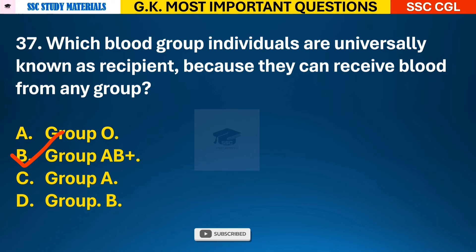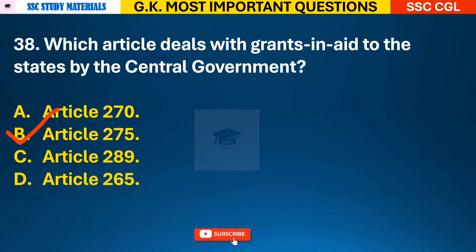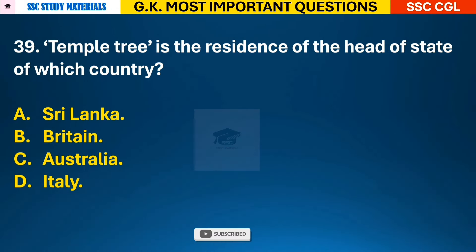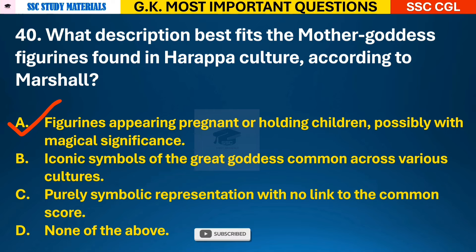Question 38: Which article deals with the grant of aid to the states by the central government? Answer B - it is Article 275. Question 39: Temple Trees is the residence of the head of state of which country? Answer A - Sri Lanka. Question 40: What description best fits the mother goddess figure found in Harappa culture according to Marshall? Answer A - figure appearing pregnant or holding children, possibly with magical significance.